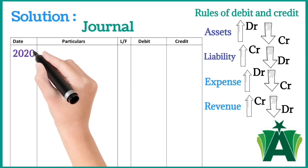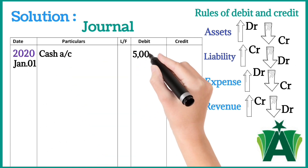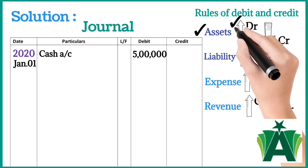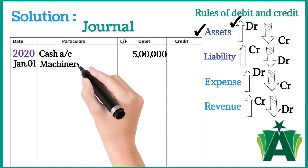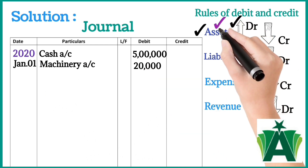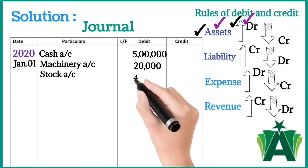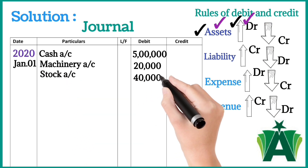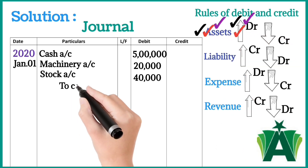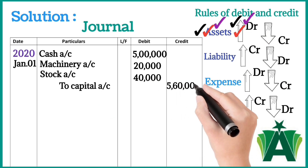January 1: Cash account debit with $500,000 — reason: cash is an asset and increases in business. Machinery account debit with $20,000 — reason: machinery is an asset and increases in business. Stock account debit with $40,000 — reason: stock is an asset and increases in business. To capital account credit with $560,000 — reason: capital is a liability and increases in business.